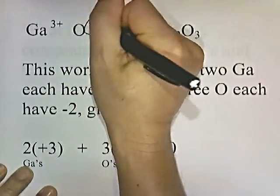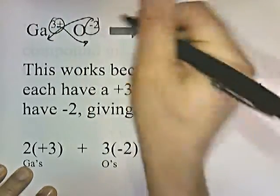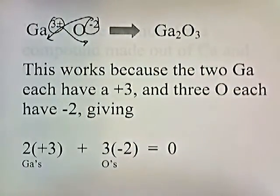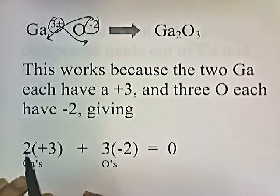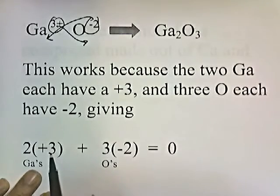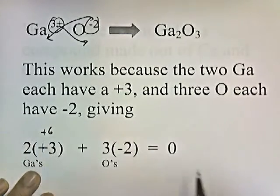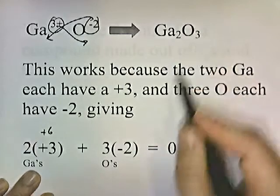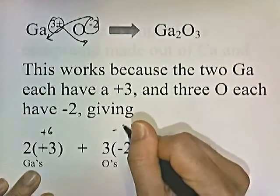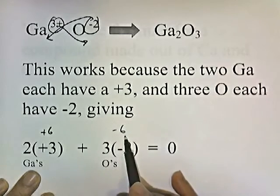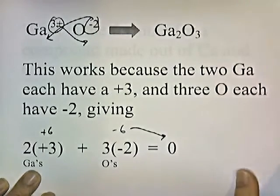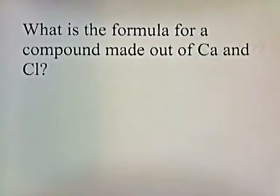The formula for a compound made of gallium and oxygen is Ga2O3. This works because two gallium atoms each have a plus three charge, giving plus six total, and three oxygen atoms each have a negative two charge, giving negative six total. Plus six and negative six add up to zero, confirming the formula is correct.